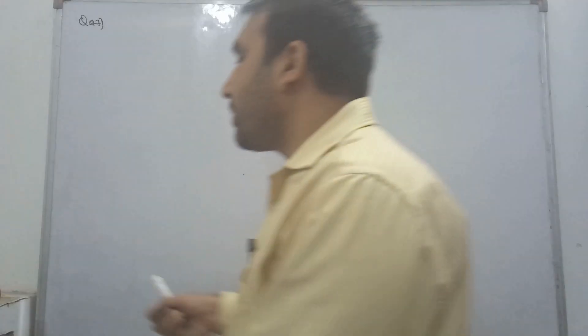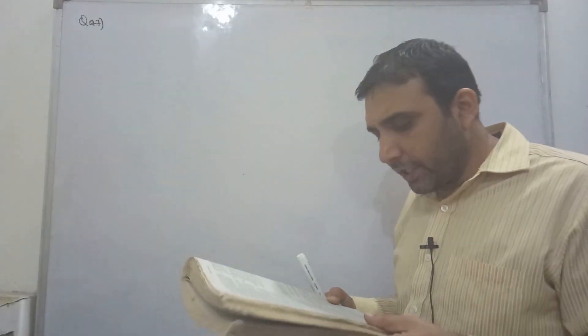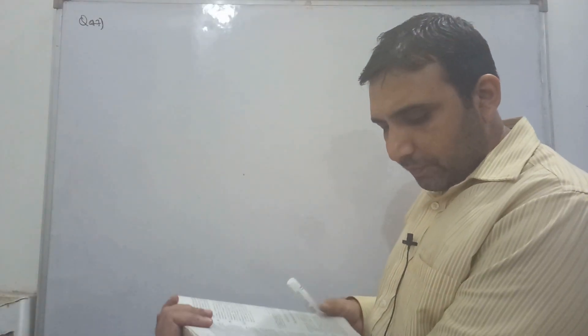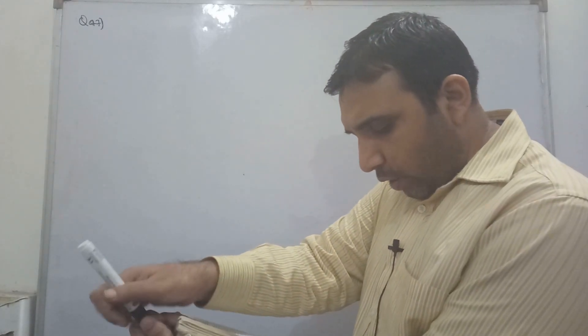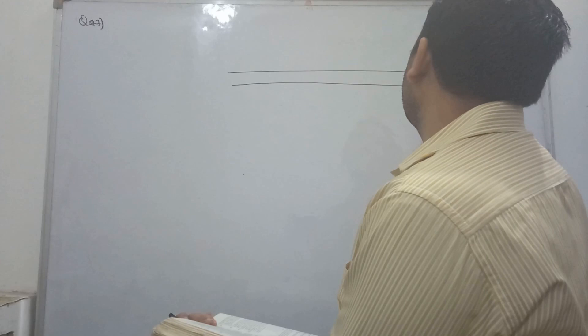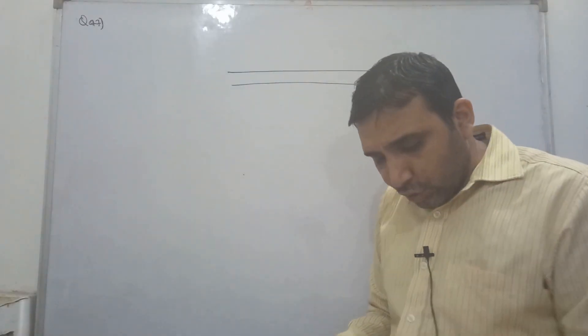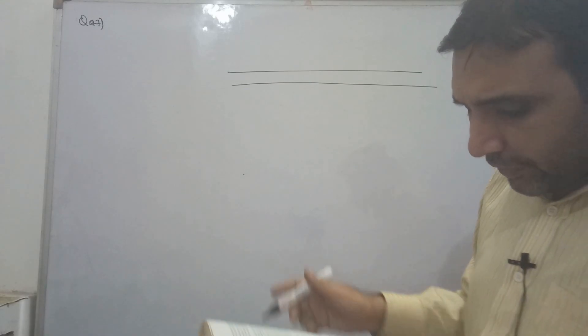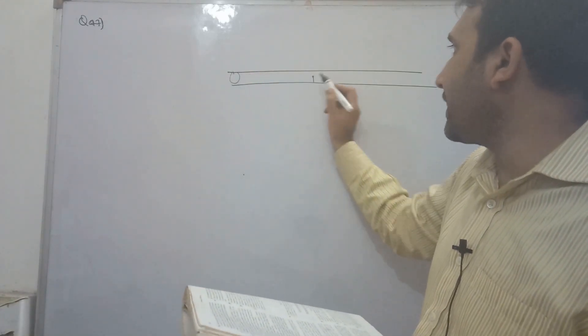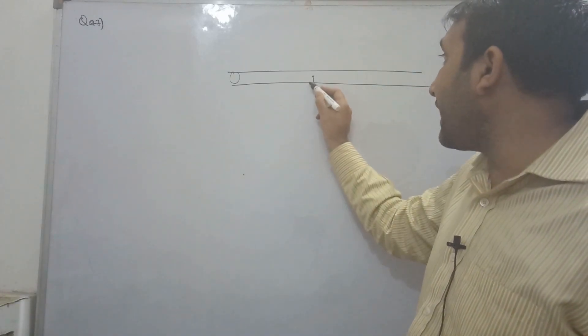So now let's see question number 47. A thin but long hollow cylindrical tube of radius r carries a current i along its length. So this is a thin but long hollow cylindrical tube of radius r, and it carries a current i along its length.